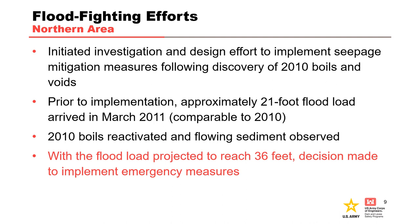Following the discovery of extensive sand boils and voids in 2010, a fast-tracked geotechnical investigation and design effort for construction of seepage mitigation measures at the levee was initiated. In March 2011, before the permanent measure could be designed and built, the Mississippi rose to 98.95 feet, resulting in a differential loading of 21 feet — comparable to 2010. At that point, the boils discovered in 2010 were reactivated and sediment was observed flowing out of them. With the river projected to rise to a level that would produce an additional 15 feet of flood load, the decision was made to implement emergency measures to combat foundation seepage.